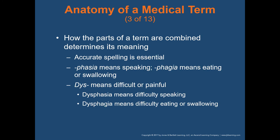Accurate spelling is essential. For example, phasia — P-H-A-S-I-A — means speaking, versus phagia — P-H-A-G-I-A — which means eating or swallowing. Adding the prefix dys, meaning difficult or painful, gives us dysphagia or dysphagia — one means difficulty speaking, the other means difficulty eating or swallowing. Just changing one simple letter in an entire word changes its complete meaning, so be very particular and careful when documenting and selecting these terms.